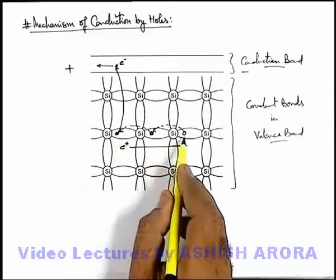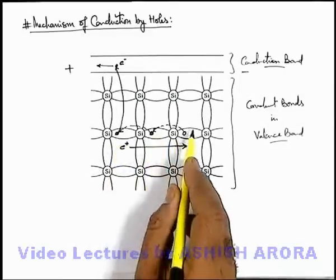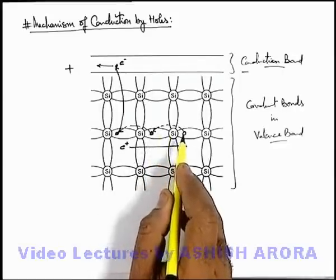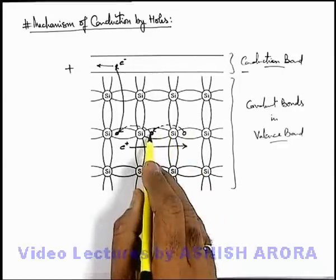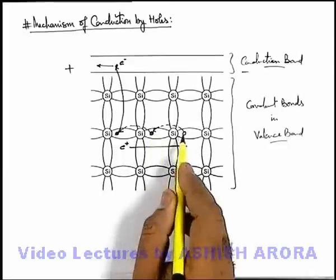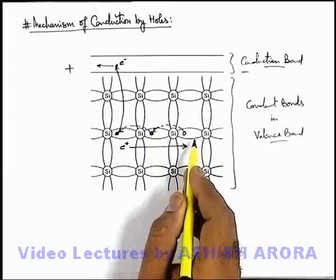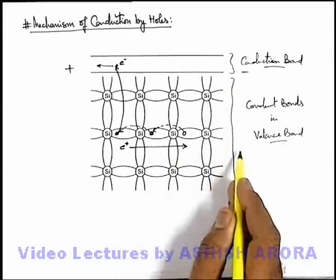With almost negligible amount of energy which is required in breaking and reformation of this bond, because both the amounts of energies which is required to break the bond and released in formation of bond are almost equal. So continuous flow of holes will take place toward the side of low potential end.